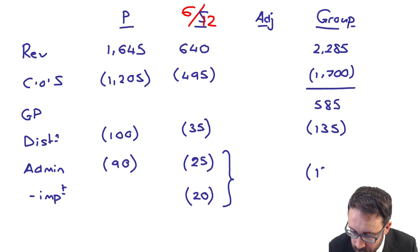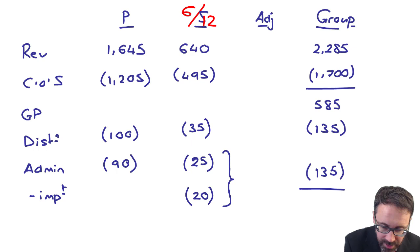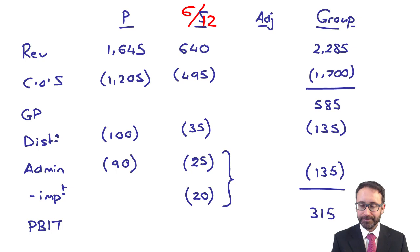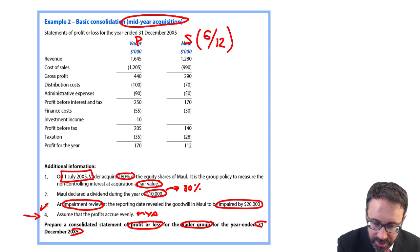Once you've got that, you can then work out that your admin expenses are also 135. And that gives me my profit before interest and tax. That's 315. So we're proceeding along quite nicely. We're down to here. Your profit before interest and tax.